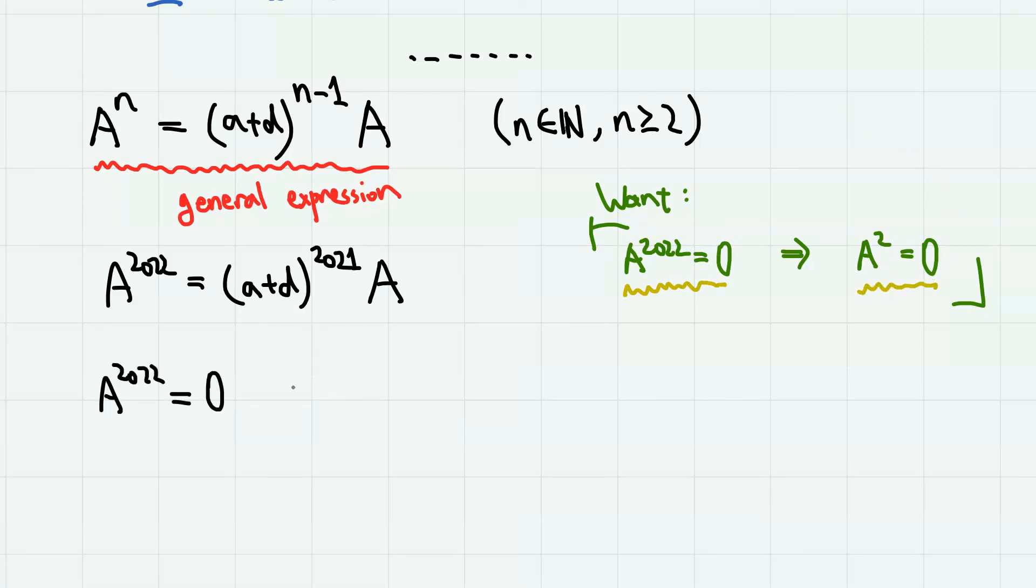So if A to the power of 2022 equals 0 matrix, it means that A plus D to the power of 2021 times matrix A equals 0 matrix. So either A plus D to the power of 2021 is 0,